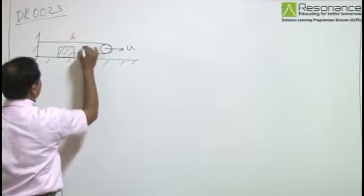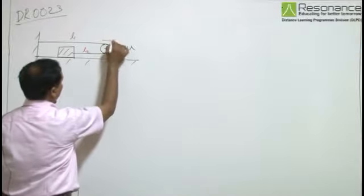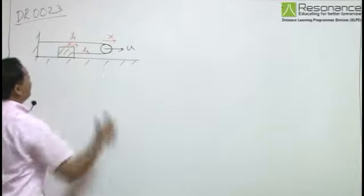Let the length of this portion of the strings be l1 and l2. And let in time t, the pulley moves forward by x and the block moves forward by y.